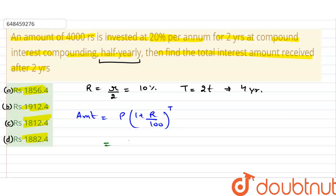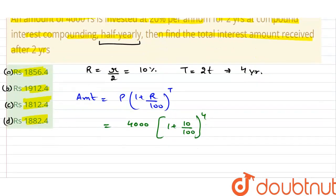तो यहाँ पर values रख देते हैं. Principal कितना है हमारे पास 4000, rate of interest कितना है 10, और time कितना है 4 years ठीक है, तो यह कितना हो जाएगा.